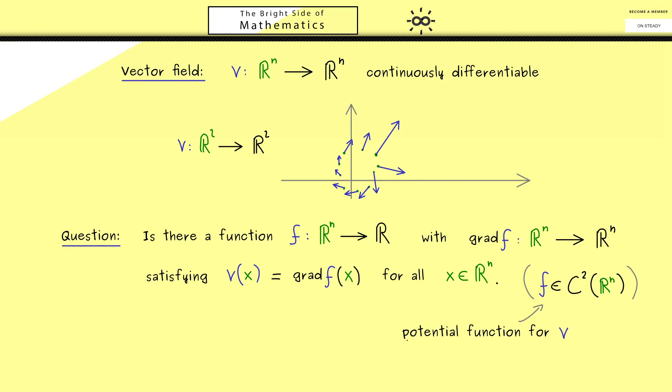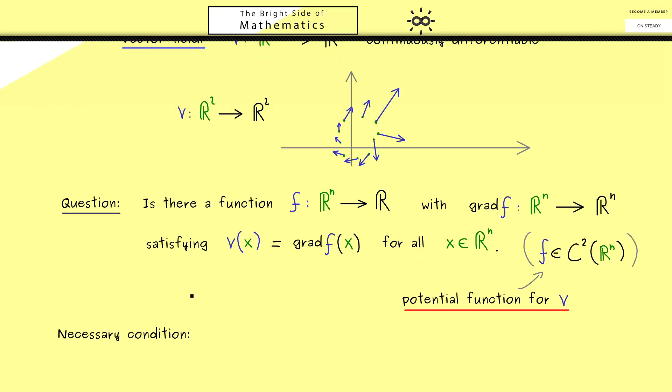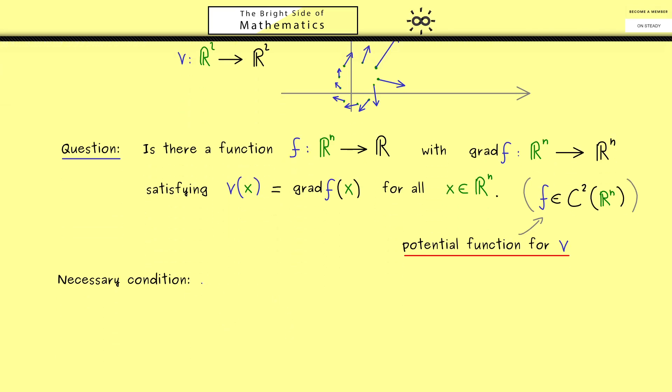So you can say, the potential function carries all the information for the vector field V. However, we will not answer this question in general for now, but we will give a necessary condition for the existence of such a function. Indeed, we get this immediately from Schwarz's theorem. So I would say, let's calculate it.